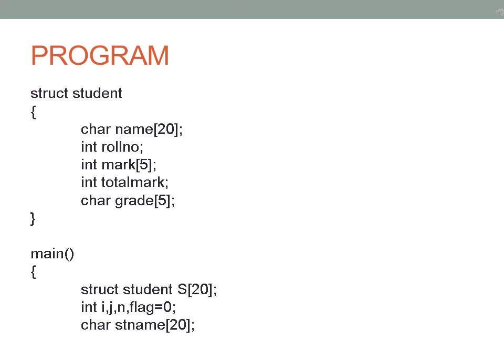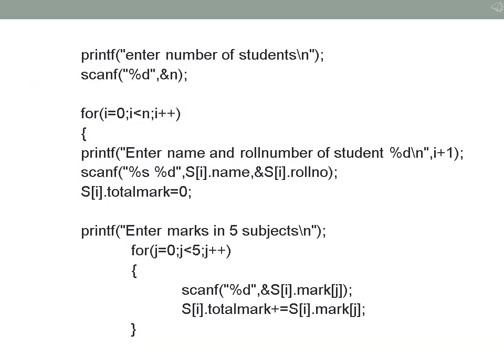In the main program we have created a student structure array S of 20, which can store the details of 20 students. If you want to store the details of 50 students you can write it as struct student S of 50. We also have a character array st_name which stores the name of the student whose details are required. Initially you enter the number of students in the class, storing it to n. Using a loop for i equal to 0, i less than n, i plus plus, you read the details of each student — name and roll number assigned to S[i].name and S[i].roll_number. Initially S[i].total_mark is assigned to 0.